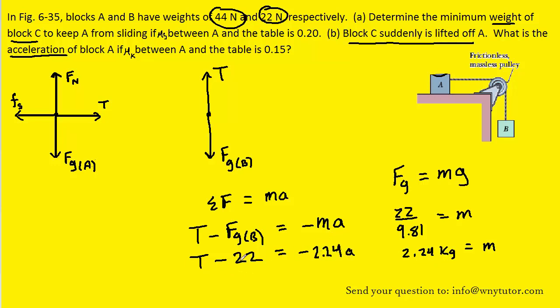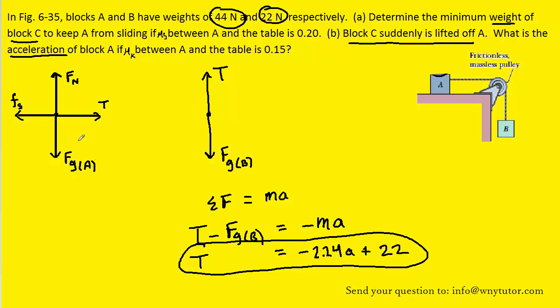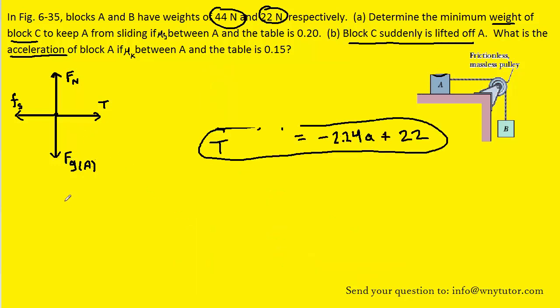And we can solve this equation for tension by adding 22 to the other side. Let's hold on to this result for tension and move over to the other free body diagram. Applying Newton's second law in the x direction, we have two forces: tension and the kinetic frictional force because we actually are sliding across the surface.